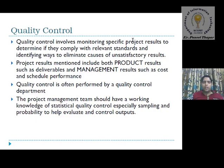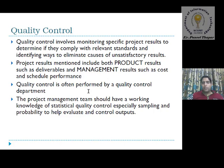The project results mentioned include two types: first is product results, and second is management results. Product results such as deliverables, or management results such as cost and schedule performance. On the basis of these two results we can control the quality. Quality control is often performed by a quality control department that controls the quality parameters of products.